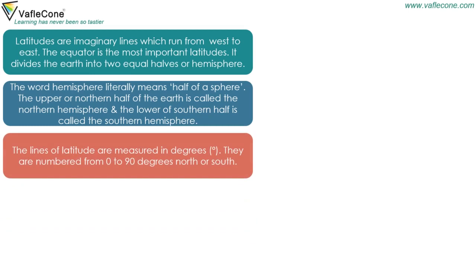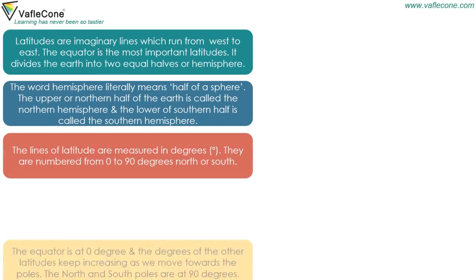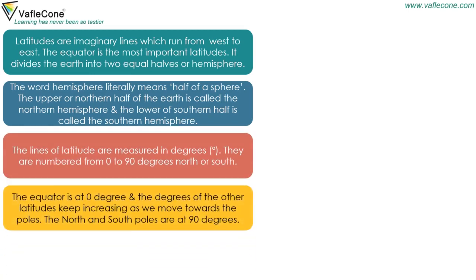The lines of latitude are measured in degrees. They are numbered from 0 to 90 degrees north or south. The equator is at 0 degrees, and the degrees of the other latitudes keep increasing as we move towards the poles. The north and south poles are at 90 degrees.